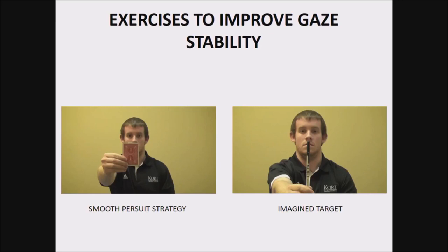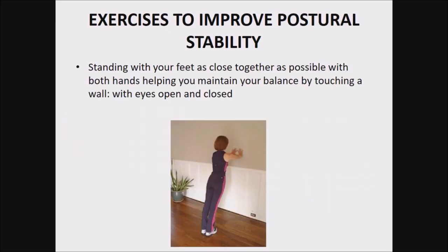For gaze stability exercises, the recommended duration is 4 to 5 sessions per day, not exceeding a total of 20 to 40 minutes. Initially, they start with 20 minutes total, with each set of exercises done for no more than 5 minutes per session. Slowly the time can increase up to 40 minutes per day, with each session lasting 5 to 10 minutes.